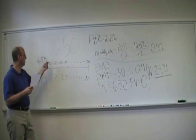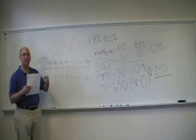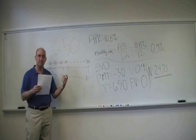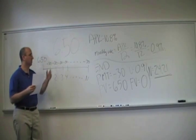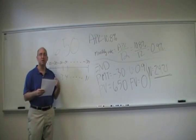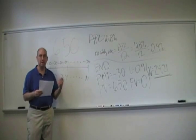So if Yu-Na makes 24.21 of those $30 payments, then the present value of those is equal to $650. And the answer to the question is 24.21 payments.